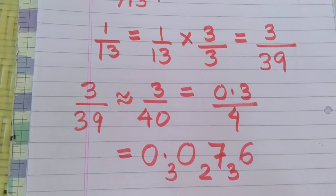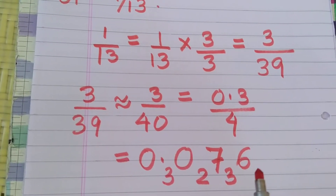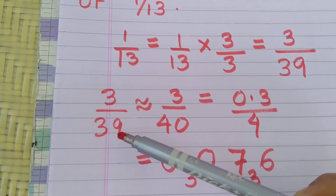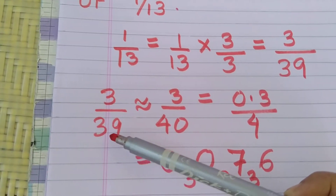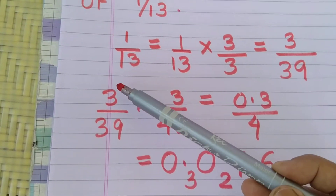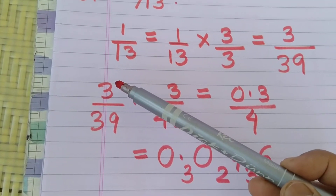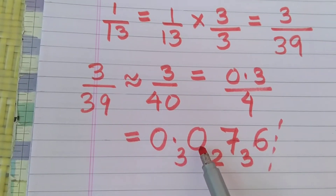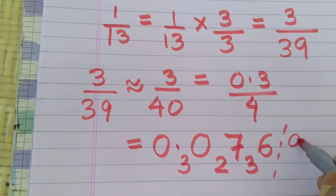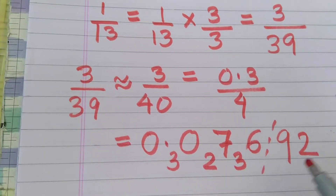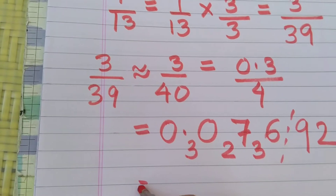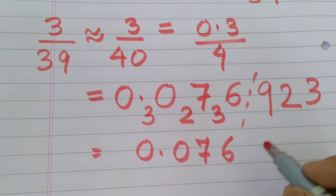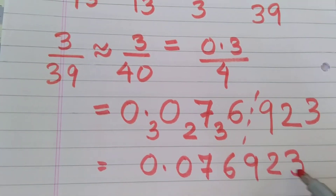Now notice — as we had in 1 by 19 also — here the numerator is 3, denominator is 39, and 39 minus 3 is 36. We have got 36 here. So what we do is we simply write the complements from here. Complement of 0 is 9, complement of 7 is 2, and complement of 6 is 3. So we have got the answer as 0.076923 bar.